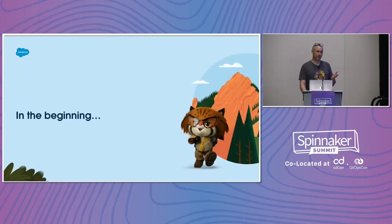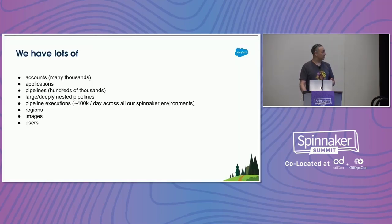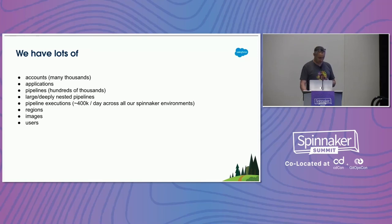We started using Spinnaker at Salesforce around 2018. Initially we were just trying to get things working, which quickly turned into getting things working at a very large scale. Scale for Salesforce means lots of accounts, lots of applications, lots of pipelines — hundreds of thousands of pipelines — deeply nested pipelines, and around 400,000 executions per day across all our Spinnaker instances. We're deploying in lots of regions, we have lots of images, lots of users — we run into limits all the time, and we're knocking those limits down.